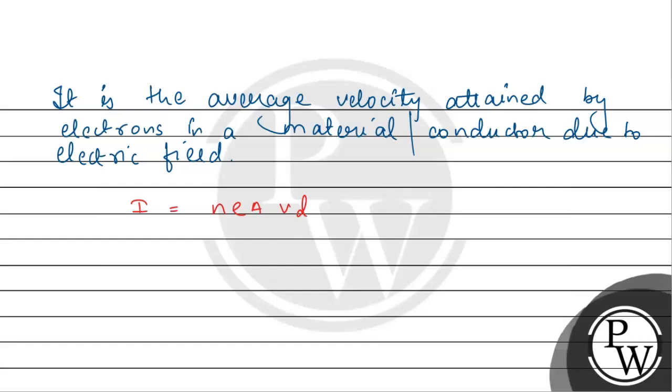We can write I as potential difference V upon resistance R. So this will be equal to neAvd. We can write this in Y equals MX form, where M is the slope.